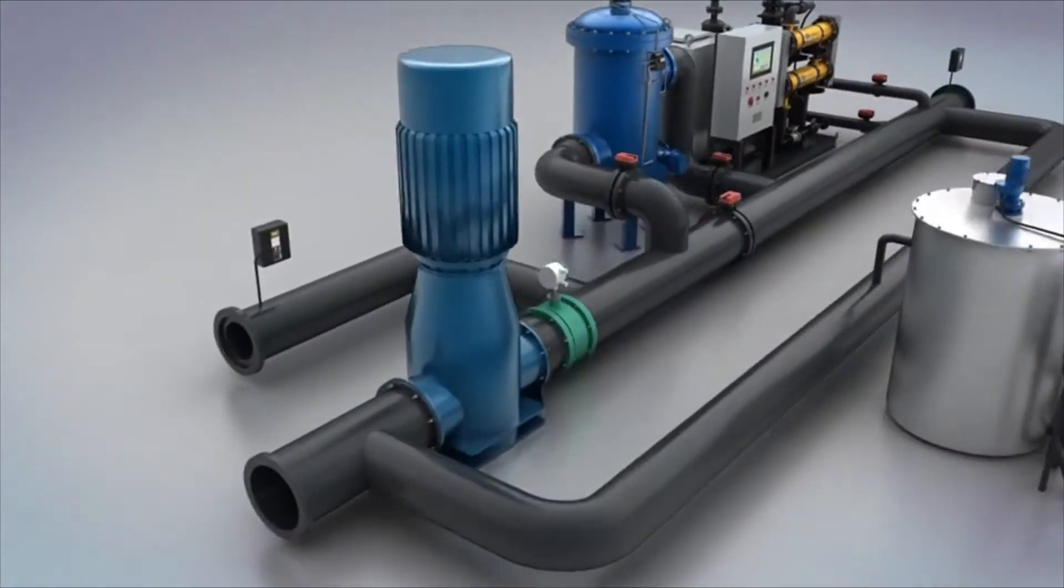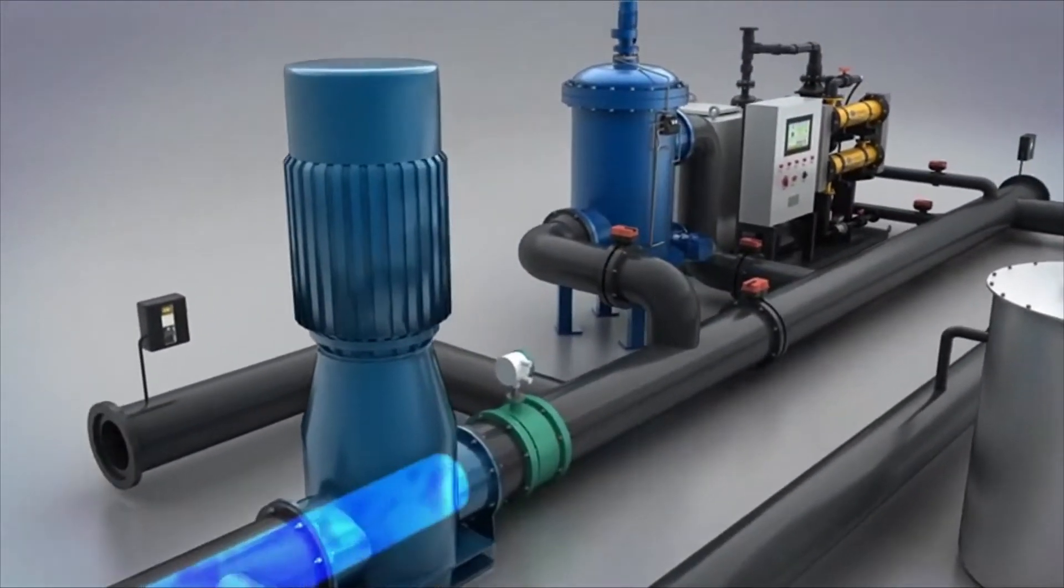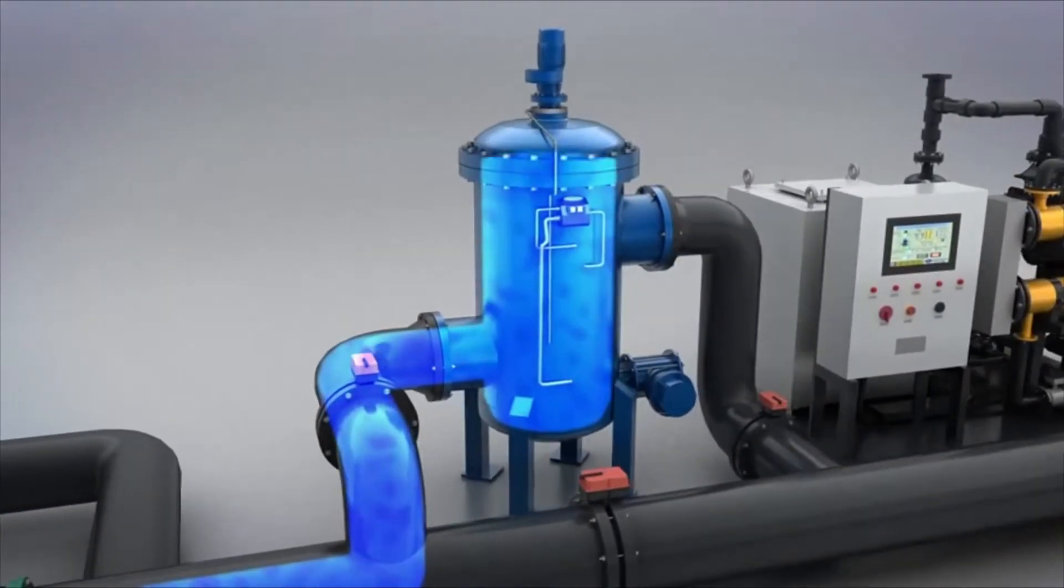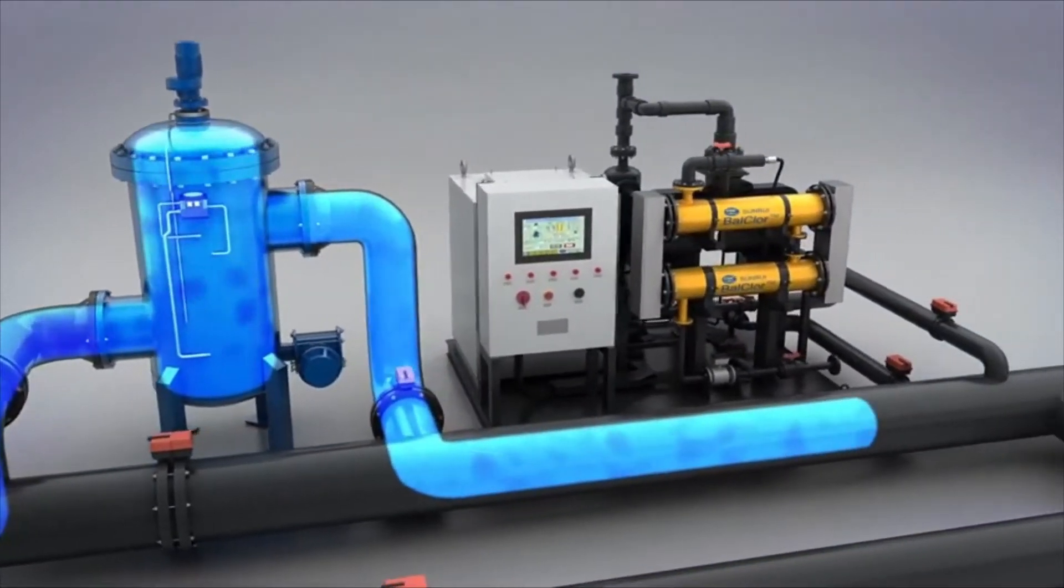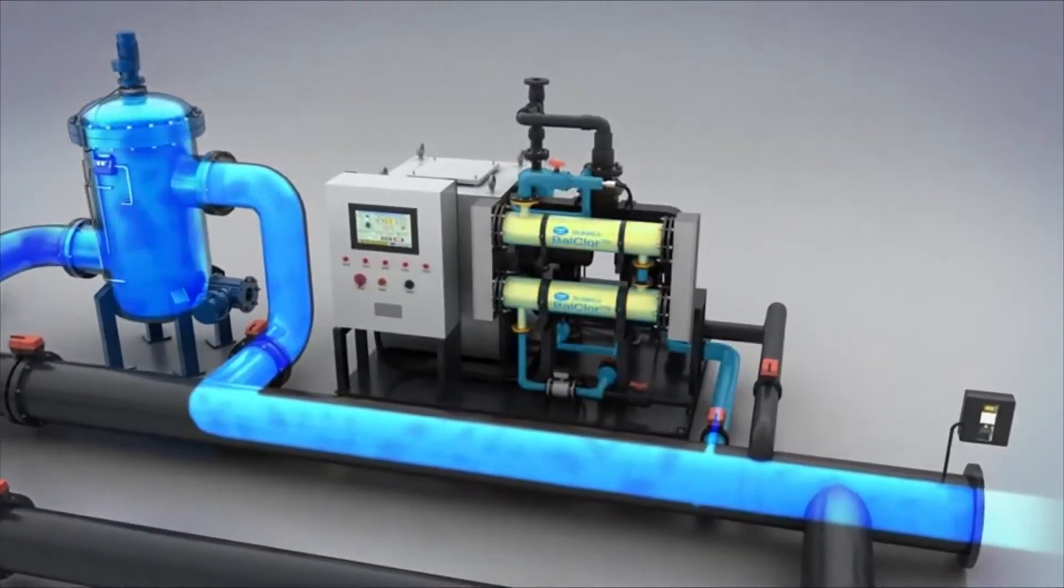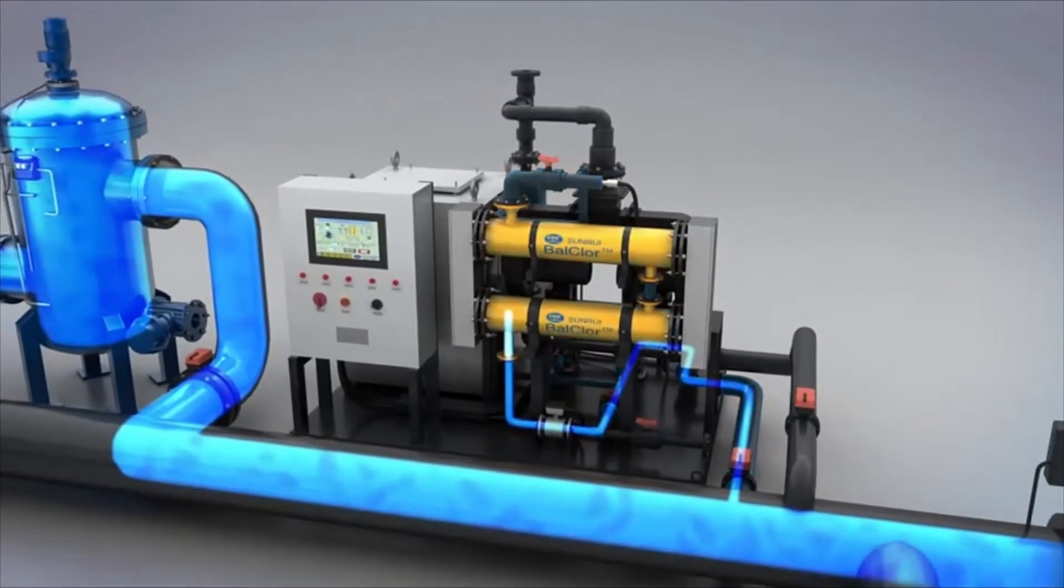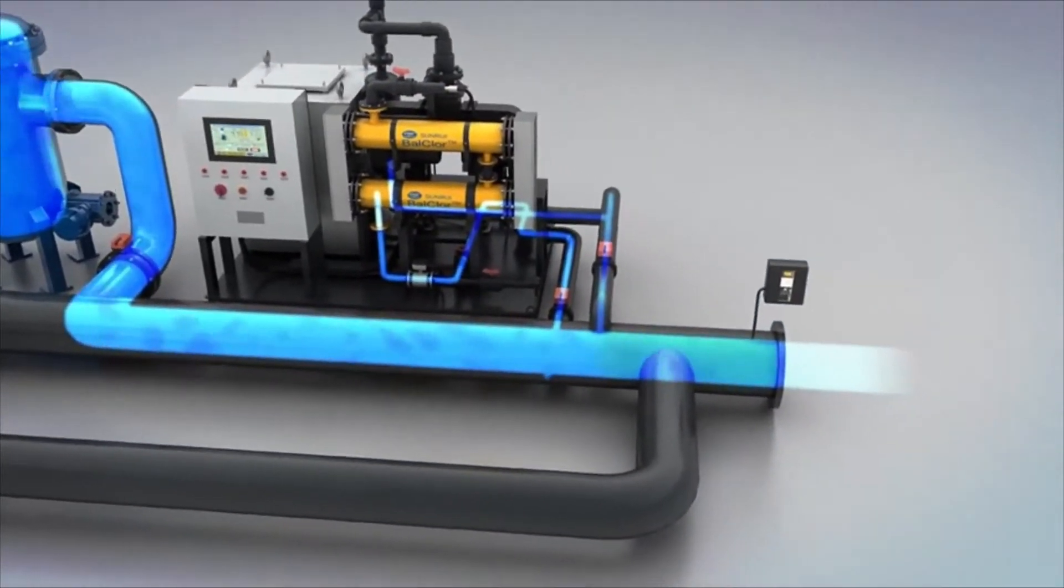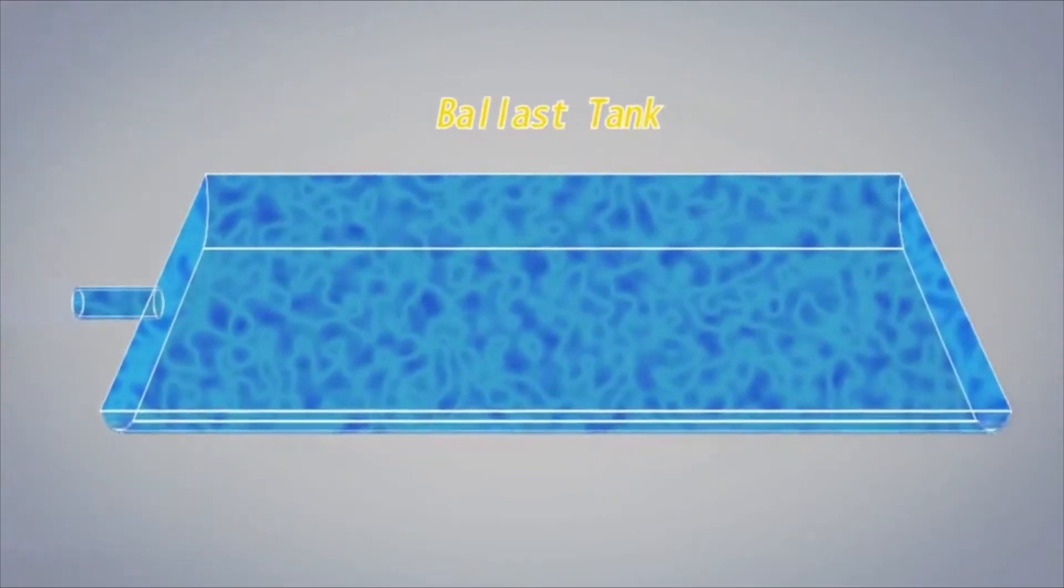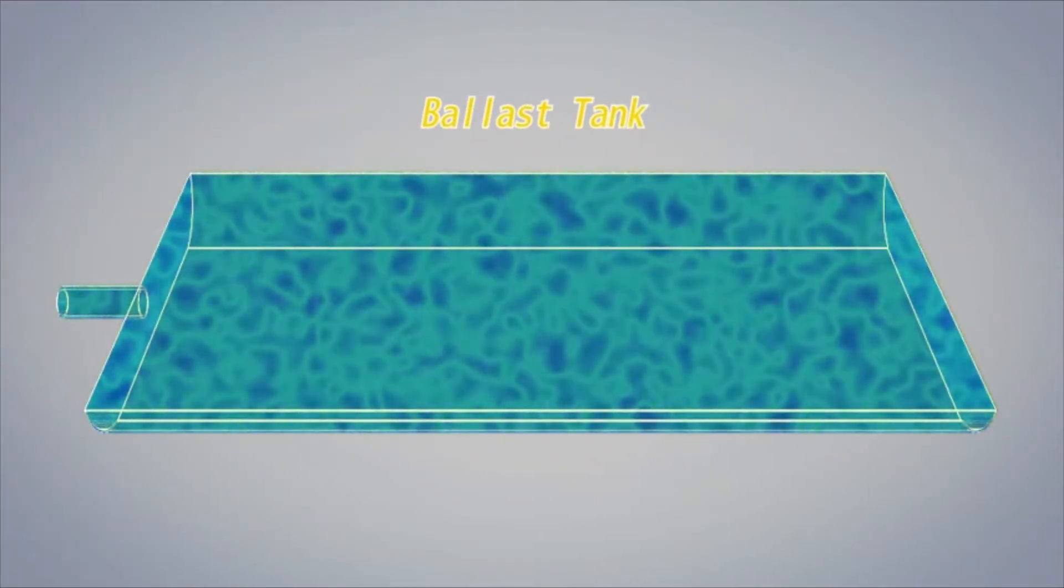During ballasting, ballast water is filtrated by an automatic back flushing filter. Marine organisms larger than 50 micrometers will be removed during this process. Then a side stream of filtered ballast water flows to electrolyzing unit to generate high concentrated oxidant, mainly sodium hypochlorite solution, which will be injected back into main ballast stream to provide effective disinfection to meet D2 discharge standard.